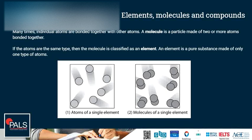So many times individual atoms are bonded together with other atoms. A molecule is a particle made of two or more atoms bonded together. If the atoms are the same type, the molecule is classified as an element. An element is a pure substance that is made of only one type of atom. If you're not sure what an atom is, there is another lesson where we talk about atoms in detail.